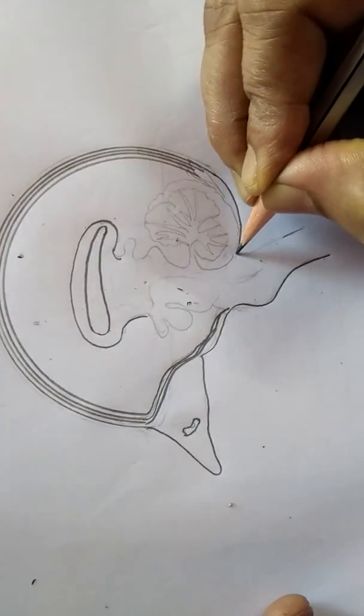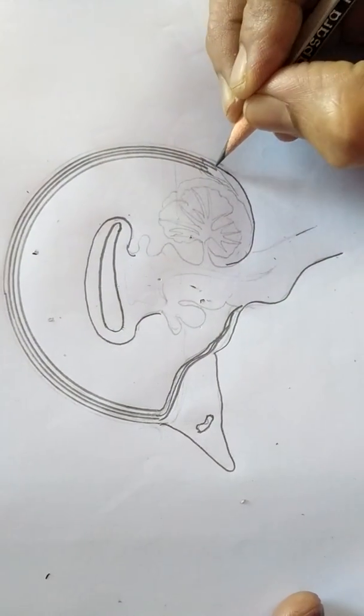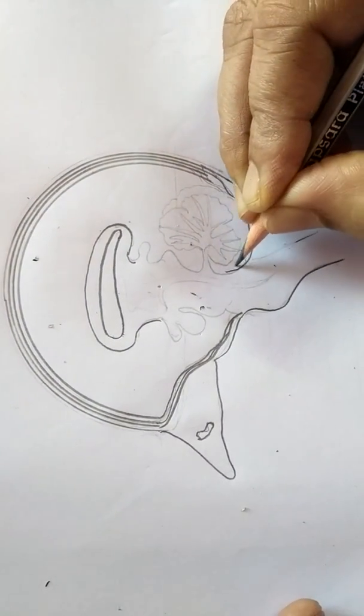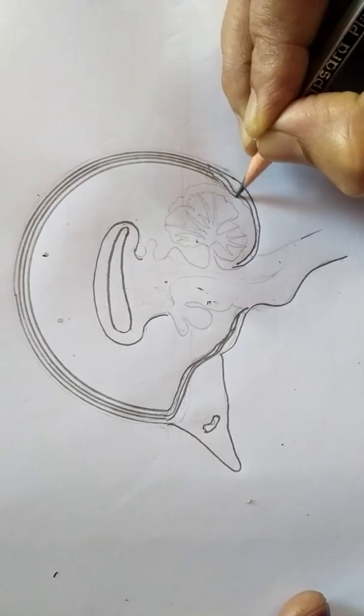So this is the outer line, inner line, and continue the lines.